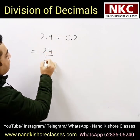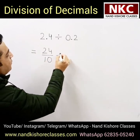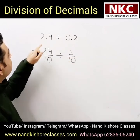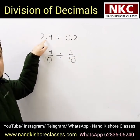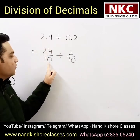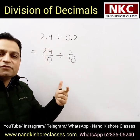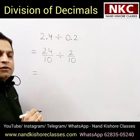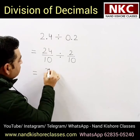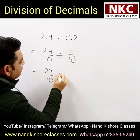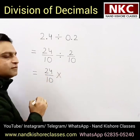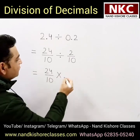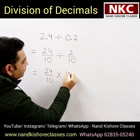After removing the decimal, we get 24 over 10 divided by 2 over 10. Because once we remove the decimal, after the decimal only one digit is coming, that is why only one zero will be placed, making it 10. Now it is just a division of fractions — you just need to change the division sign to multiplication and take the reciprocal of the next term, so 2 over 10 becomes 10 over 2.